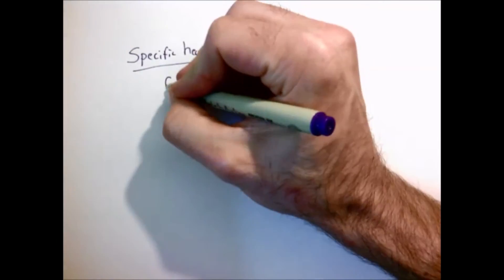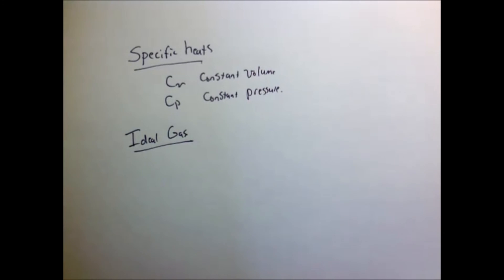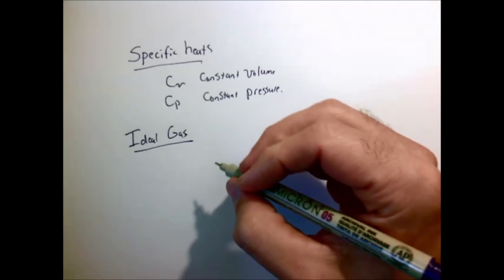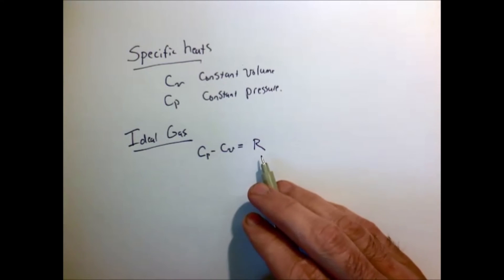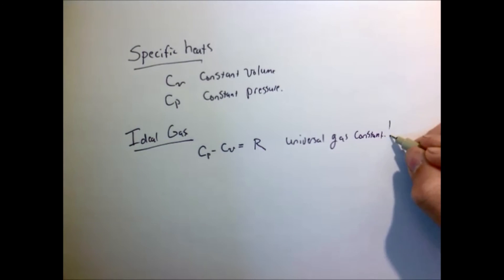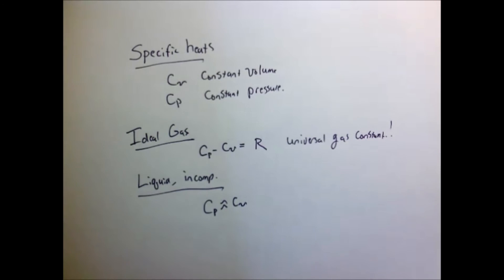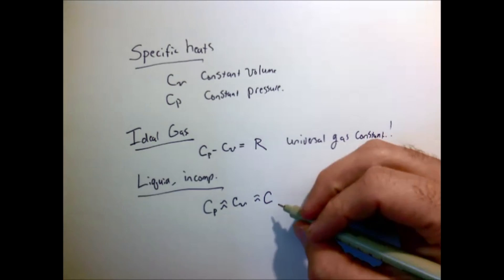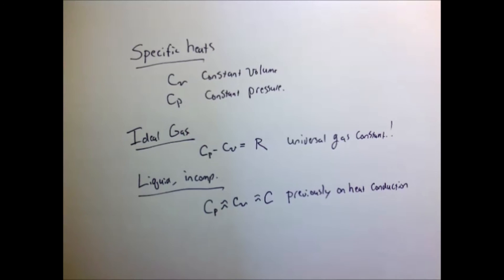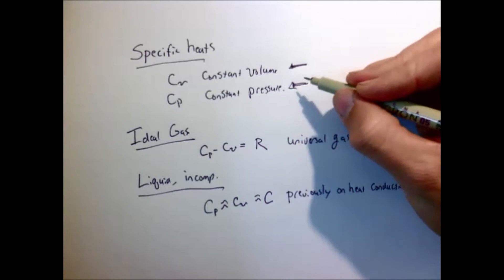When we're more precise with thermodynamics, we have two specific heats: constant volume (C sub V) and constant pressure (C sub P), and they're not always the same. For an ideal gas, the difference between the constant pressure and constant volume specific heats equals R, the universal gas constant. For a liquid, which is nearly incompressible, C sub P and C sub V are nearly the same, so we can be a little sloppy and just talk about 'the specific heat,' as we did when discussing heat conduction. But now that we're working with conservation of energy in fluids, we have to be more precise.